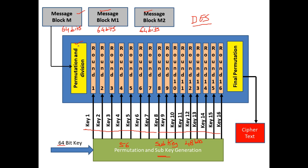Once the keys are ready, the next thing is we'll be taking in the message, understanding the permutation and division of the block. The output of this block is given to a block called a round — we have almost 16 rounds. All these rounds perform the same action but with different input. The output of one round will be the input of the next round. We complete 16 rounds, finally perform some final permutations, and then give the ciphertext out. That is the overall higher-level view of what Data Encryption Standard is all about.